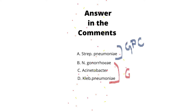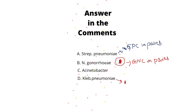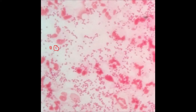Options B, C, and D are gram-negative organisms. Looking at arrangement: Neisseria gonorrhoeae is seen intracellularly and appears as gram-negative cocci in pairs. Streptococcus pneumoniae is gram-positive cocci in pairs. Klebsiella pneumoniae is a gram-negative bacilli, and Acinetobacter are gram-negative coccobacilli in pairs.